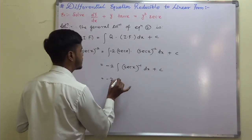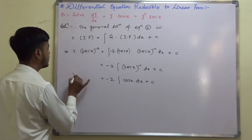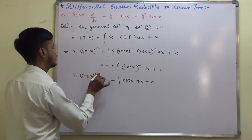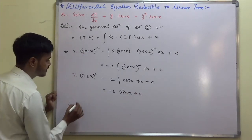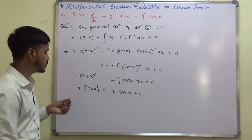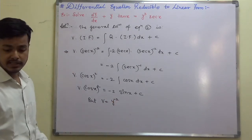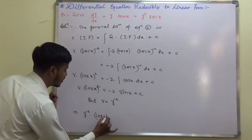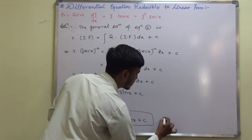Integrating cos(x) gives sin(x), so we have v·cos²(x) equals minus 2·sin(x) plus c. Now substituting back v equals y⁻², we get y⁻²·cos²(x) equals minus 2·sin(x) plus c. This is the required solution for the given problem.